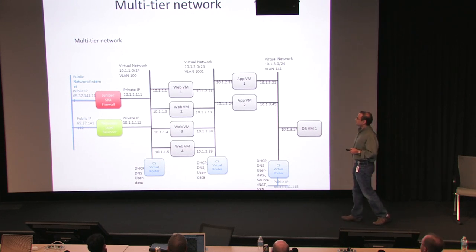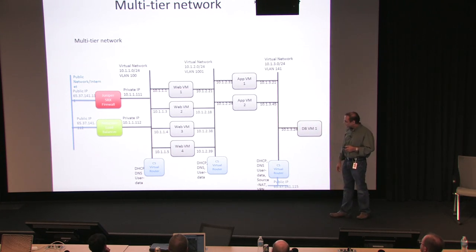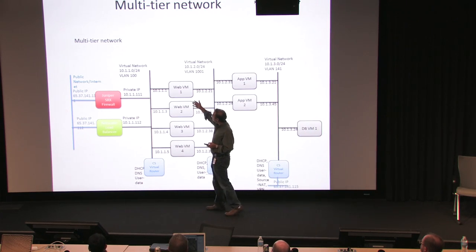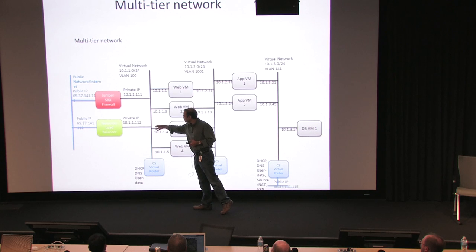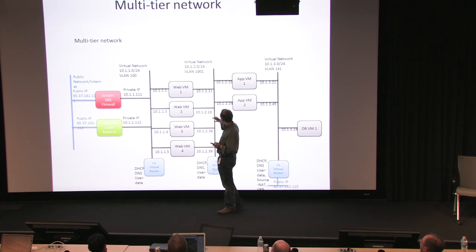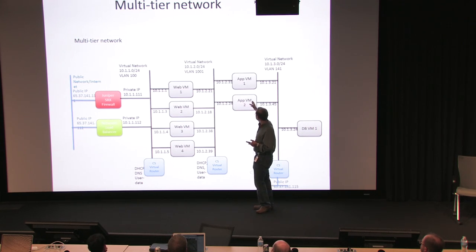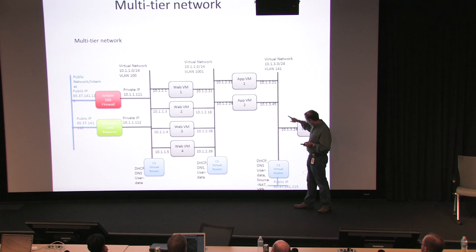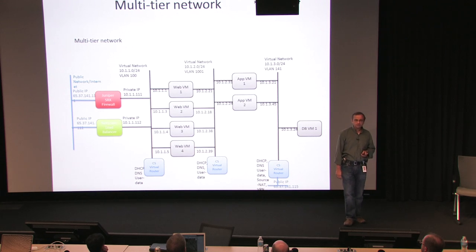You could also do a multi-tier network — the classic web, app, and DB topology. It is complicated. What you would do is get your web VMs to have two NICs, one on the web network, one on the app network, and then the database network. So web VMs can talk to app VMs and app VMs can talk to DB VMs. The app VMs and DB VMs can get out to the public internet to get patches or whatever they need. You can also SSH into your app VM or your DB VM.